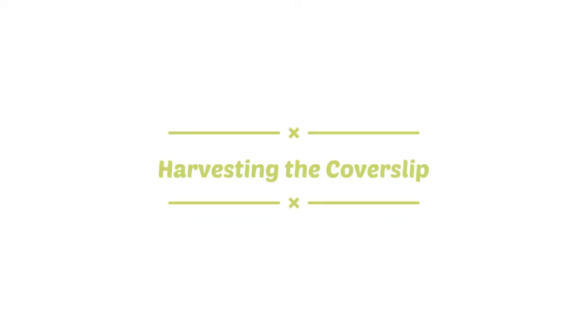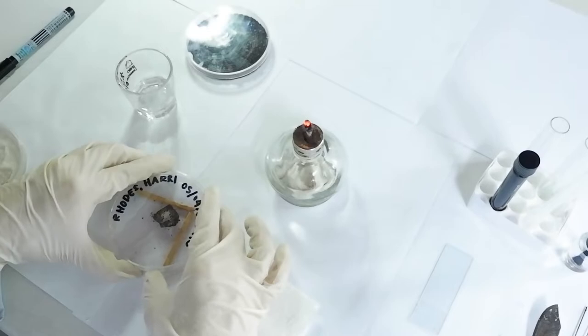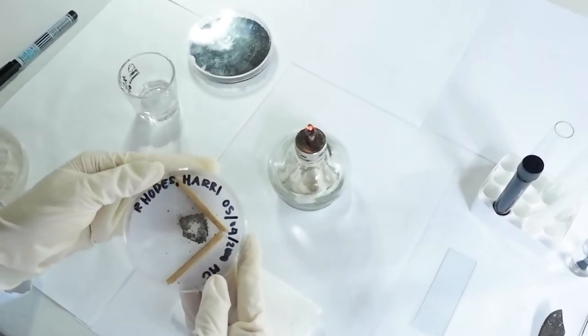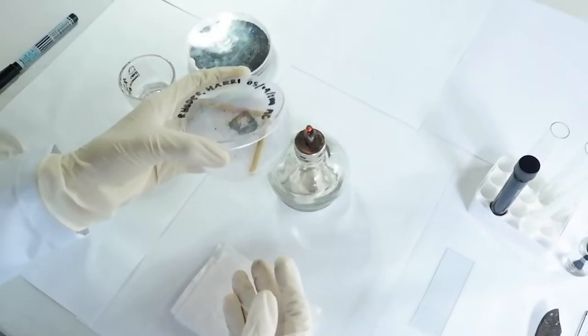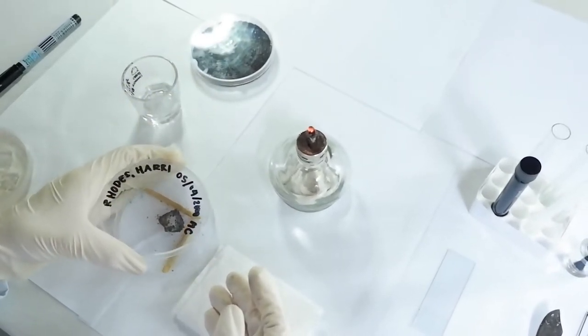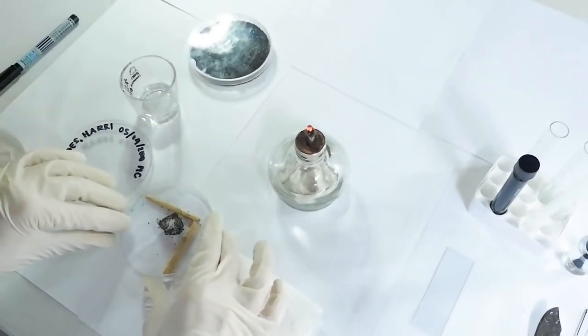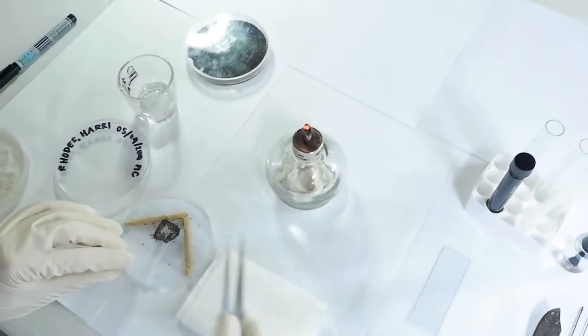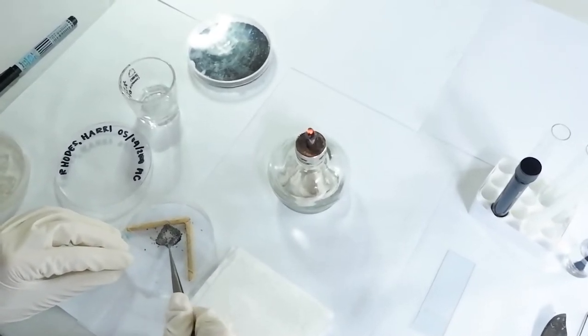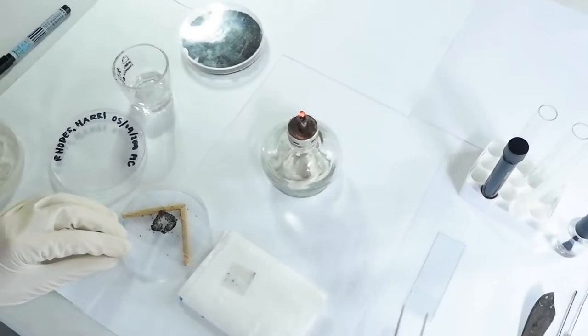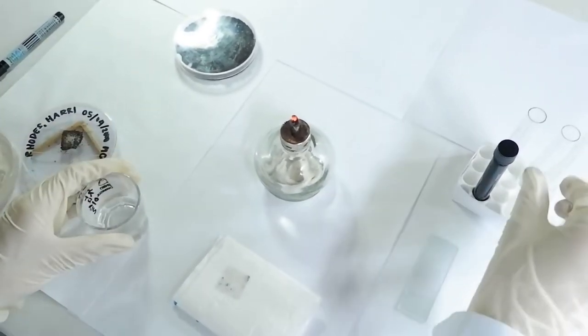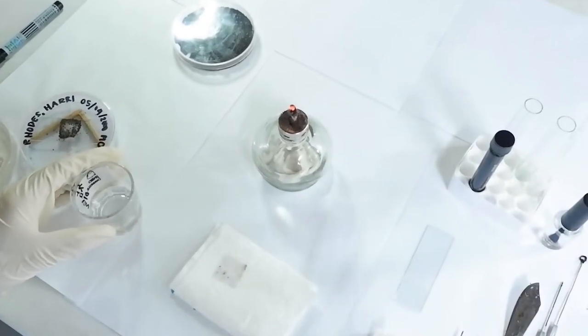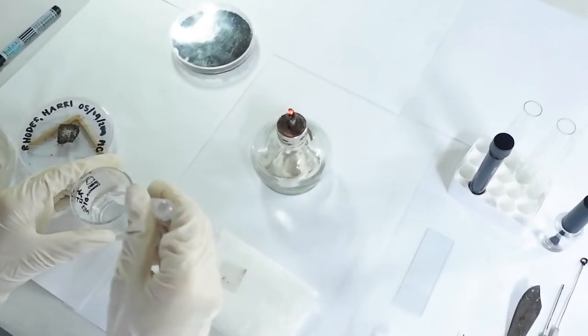Harvesting the cover slip. Aseptically remove the cover slip from the microculture leaving the SAB on top of the slide. Now we place a drop of absolute alcohol on the side of the cover slip with culture.